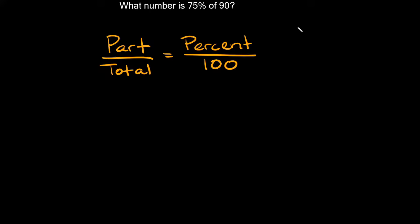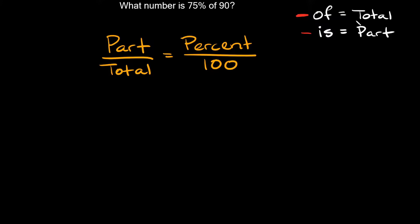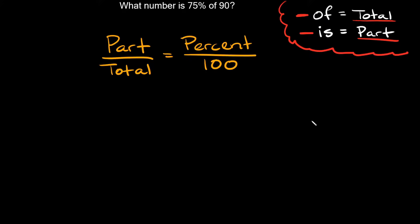Let me clear one thing up for you. There are two key words: 'of' and 'is.' Whenever you see the word 'of' next to a number, that's talking about the total. Whenever you see the word 'is' next to a number, that's talking about the part — because figuring out which one's the part and which one's the total can get confusing. Use this tip and it'll clear things up a lot.